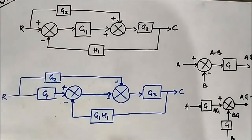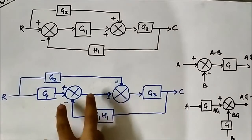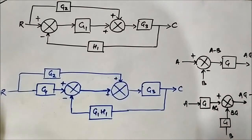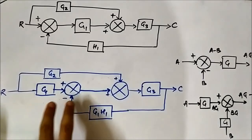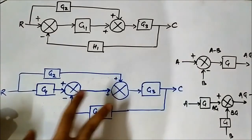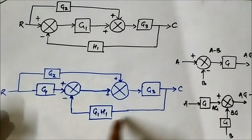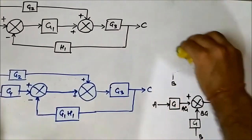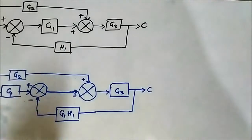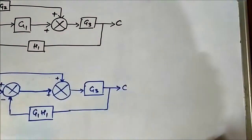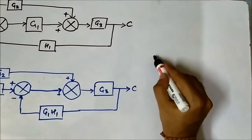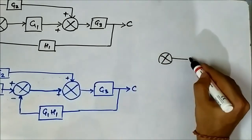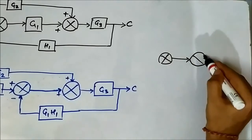Again, if we interchange these two summing points — interchange their positions — this will become simpler to apply block diagram reduction rules, because we will get two forward path blocks, and there will be a negative feedback path if we shift it here. Let me show you the basic mechanism for interchanging summers. Suppose there are two summing points — we will apply this rule.